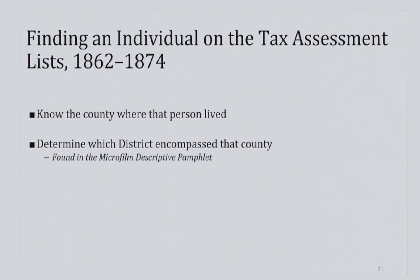Descriptive pamphlets can be found and downloaded in the National Archives Microfilm Catalog, and they are also reproduced on the first roll of each microfilm. Generally, even if you were only interested in records after 1866, it would be most useful to get the district information from the descriptive pamphlet.